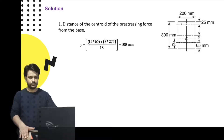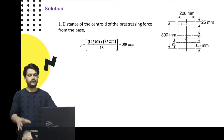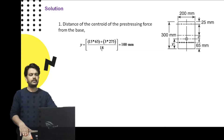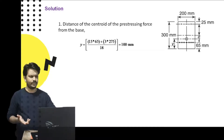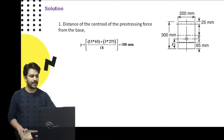There are 15 wires at a distance of 65 mm from the bottom and 3 wires at 275 mm from the bottom (since the beam is 300 mm deep, the top wires are 300 - 25 = 275 mm from the bottom). So: (15×65 + 3×275) / 18 gives the location of the resultant pre-stressing force — which is 100 mm from the bottom.